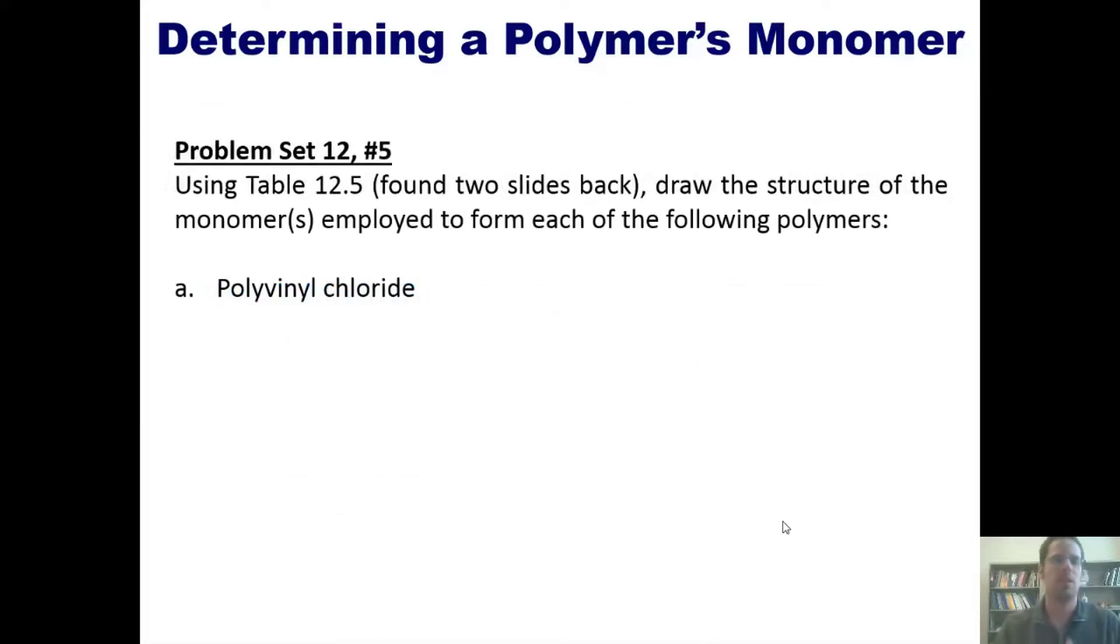Let's see if you can do it. Using table 12.5, which I showed you just two slides ago, please draw the structure of the monomers that would be used to form each of the falling polymers. Granted, I've only shown you one polymer here, but there's a part B and C to this question that I'll show you momentarily.